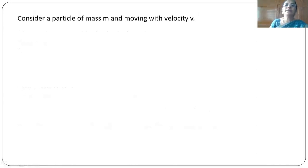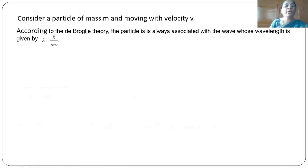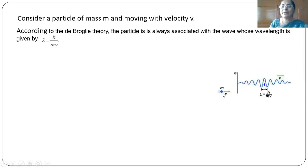Let us consider a particle of mass m moving with velocity v. According to de Broglie theory, when the particle is moving it will be associated with matter waves whose wavelength is given by lambda equal to h by mv. Here you can see a particle of mass m moving with velocity v along the x axis. When the particle is moving it is always associated with a group of waves called matter waves.